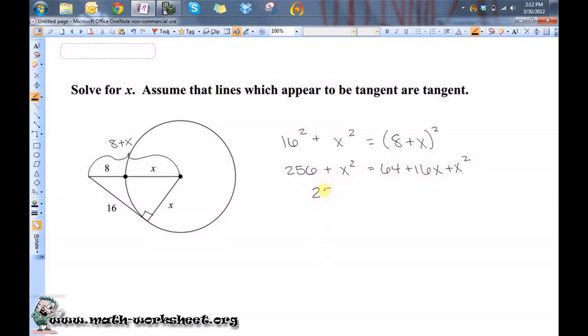Subtract x squared from both sides, and I'll get 256 is equal to 64 plus 16x. Subtract 64 from both sides, and that should be 192, is equal to 16x.